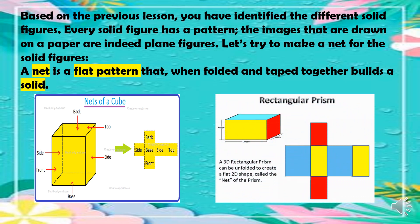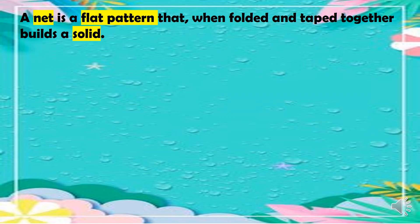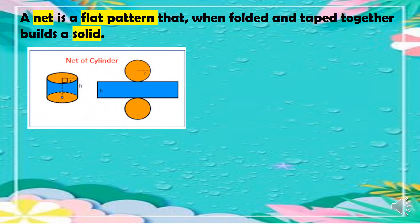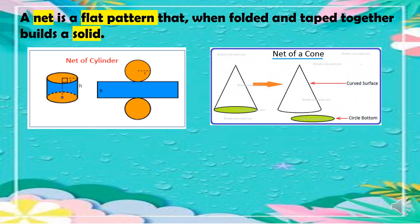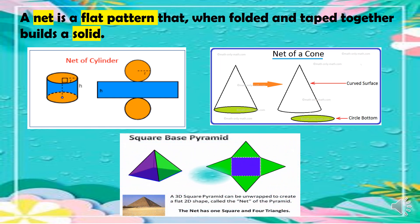If you are going to make a rectangular prism, this is the net of a rectangular prism. We also have the net of a cylinder — it looks like a division sign. Then we have the net of a cone, which has a curved surface and a circle at the bottom. And we have the net of a square-based pyramid, which has one square and four triangles.